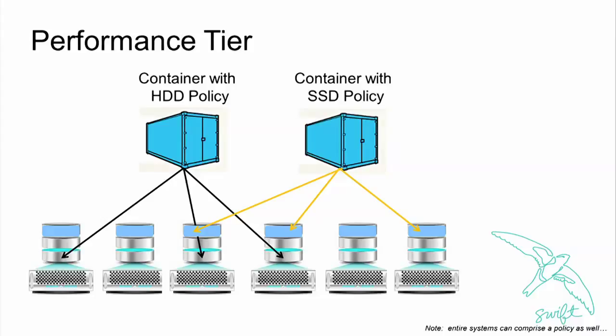Another usage model: a performance tier. I mentioned this when talking about today's use of SSDs for account and container. Imagine creating a container called your SSD policy or performance policy. When your application knows it has really important data that needs lower latency, you can store it to an SSD policy — and it doesn't have to be three copies; it could be two, one, or whatever you want, because it's its own ring. Importantly, the drives in the iconography are actually on the same physical hardware — some on different servers, some on the same. These things can overlap; they don't have to be completely discrete rings.